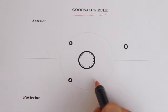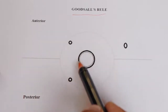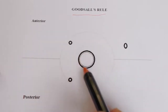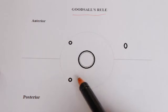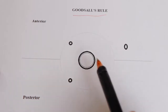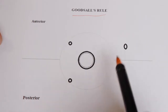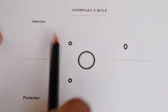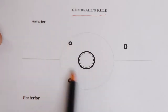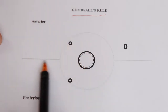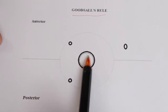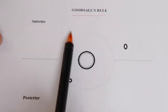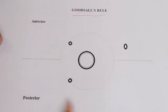Here is the anal orifice, and these are the spotted external openings of the fistula, marked for demonstration purposes. This is the perineal part. The anal orifice is divided by an imaginary horizontal line which divides it into two equal halves. The area towards the perineum is called anterior, and the area towards the back or towards the sacrum is called posterior.